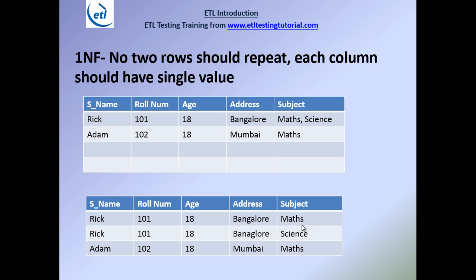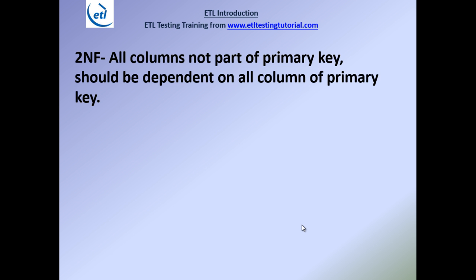The second normal form says all columns not part of the primary key should be dependent on all columns of the primary key. Also, to apply the second normal form, the data must already be in first normal form first.